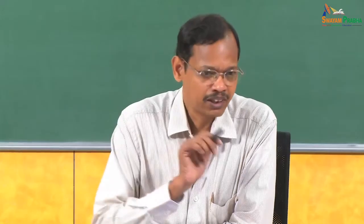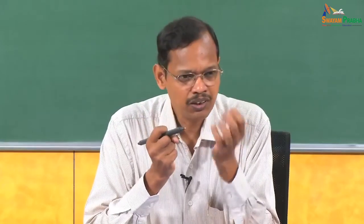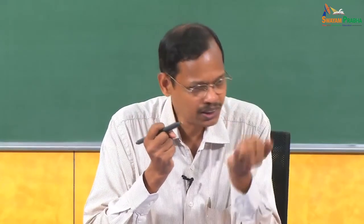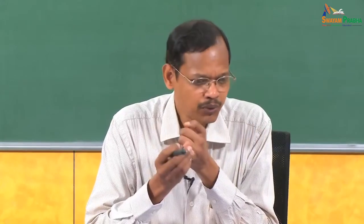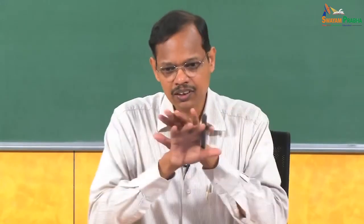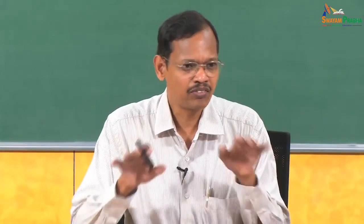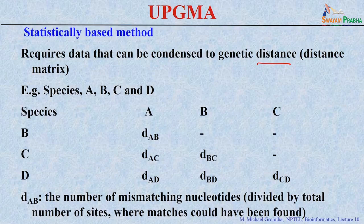UPGMA is a statistically based method. It requires the data to be condensed to a genetic distance. We can use DNA sequences or protein sequences, and we look at these sequences to see how they are different from each other — we calculate the distance. They use statistics to analyze the data and construct trees based on the distance.